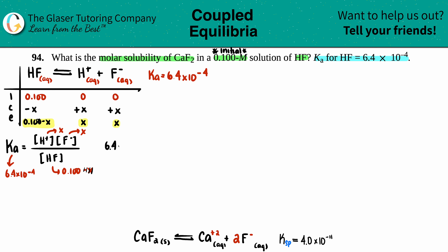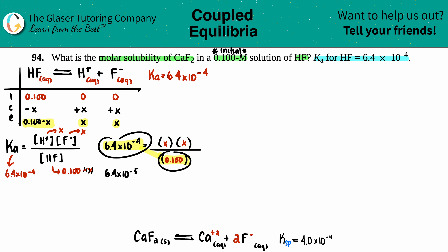So: 6.4 times 10 to the negative fourth equals x² divided by 0.100. Cross-multiplying gives x² = 6.4 times 10 to the negative fourth times 0.1, which is 6.4 times 10 to the negative fifth. Taking the square root, x equals 0.008 molarity.